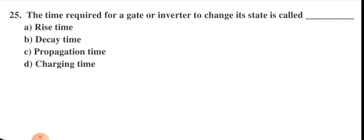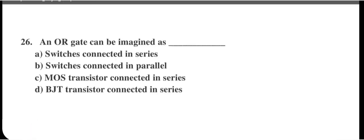The time required for a gate or inverter to change its state is called propagation time. Option C is the right answer.